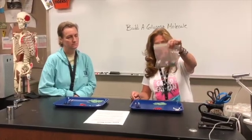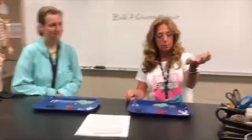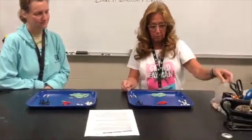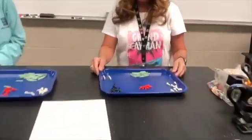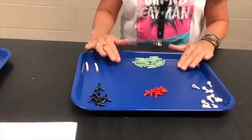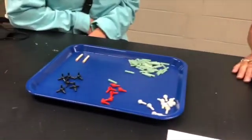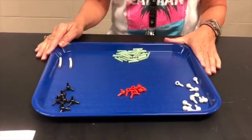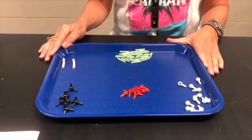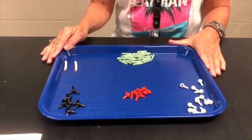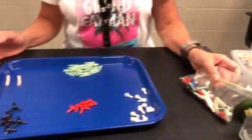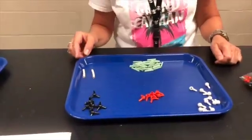We're going to begin by sorting. We have these little kits made up of little molecule pieces — tinker toys — that we can build our models with. Notice that Mrs. Sanborn and I are both working on a blue tray. We're very adamant about keeping the molecules on the tray because these kits are very expensive and we don't want to lose any parts.